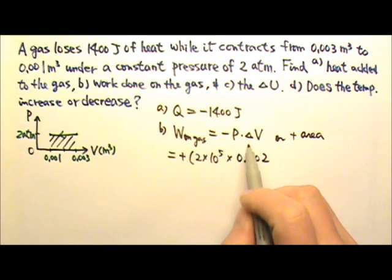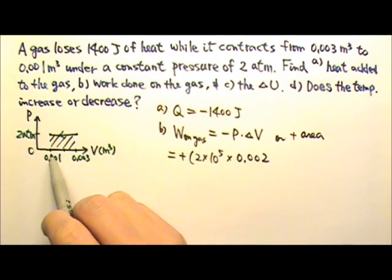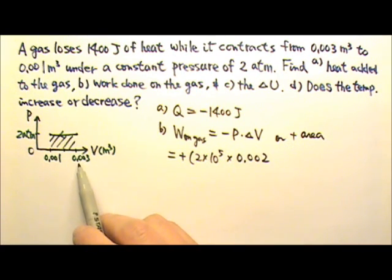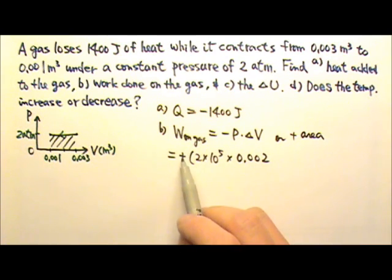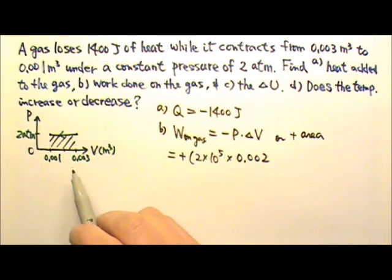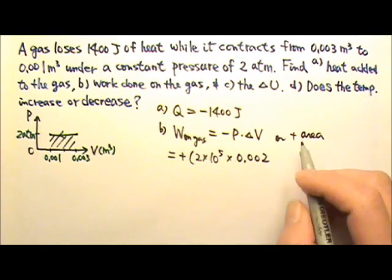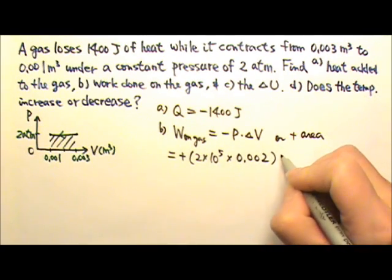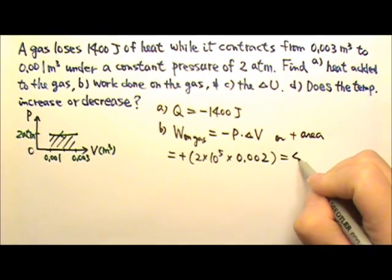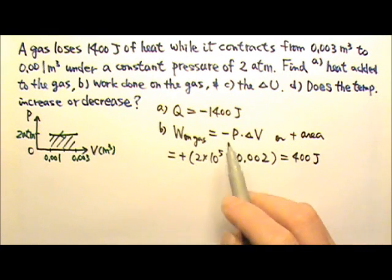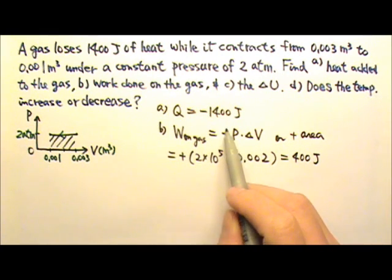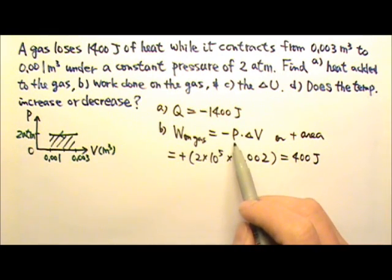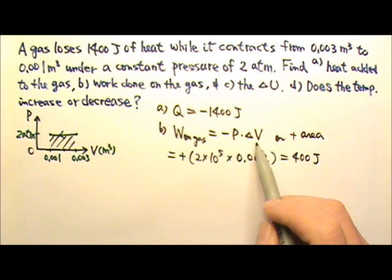Well actually the change in volume is the final minus the initial, so the change in volume is a negative number. But right now I just want the positive area. The area has a base that's 0.002. So this is 400 joules. If you use this part, you would have negative 2 times 10 to the fifth. And your delta V would be negative 0.002. So you'll end up with the same positive 400 joules.